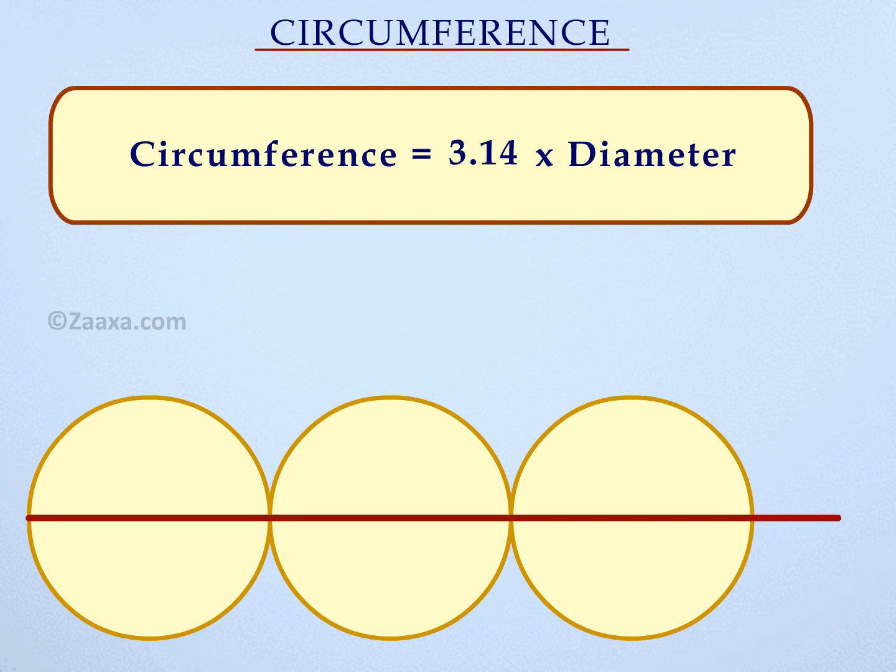This constant value is denoted by pi. The value of pi is taken as 3.14 or 22 over 7.